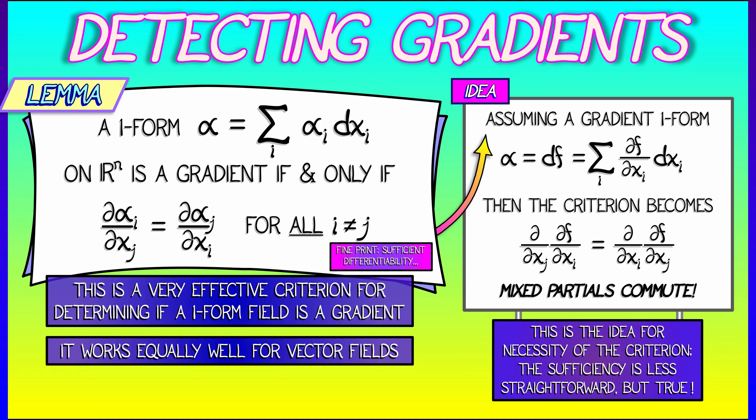Now, this works equally well for vector fields. If your vector field has components f_i, functions with respect to the x variables, then you just take the partial of f_i with respect to x_j, and the partial of f_j with respect to x_i. That works fine. Okay, let's see how this operates in the context of an example.